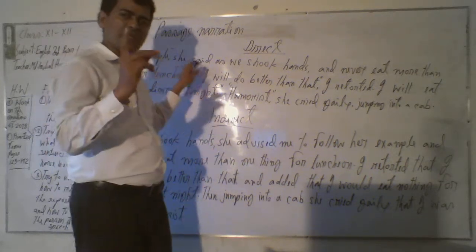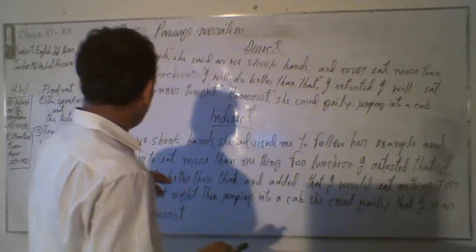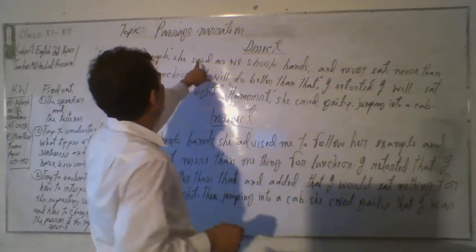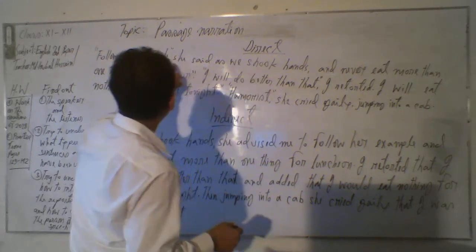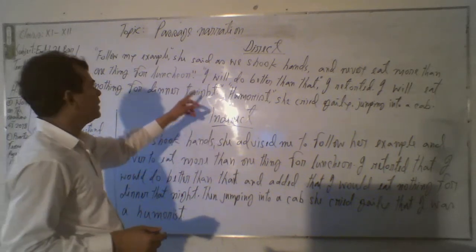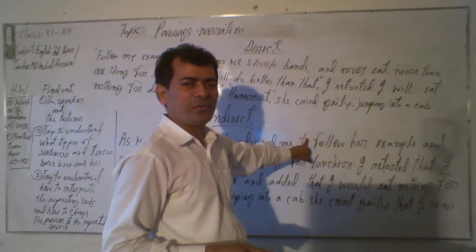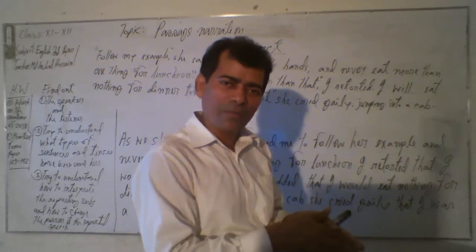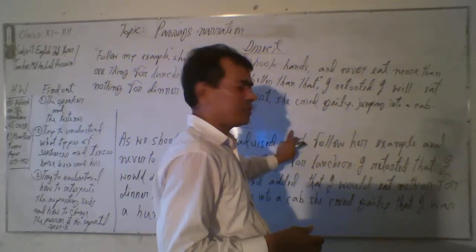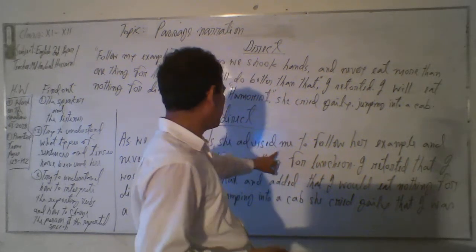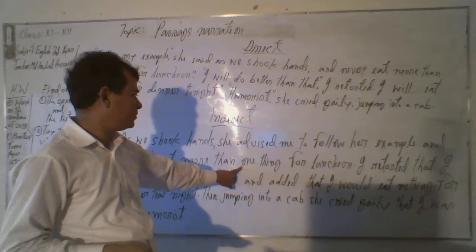The first sentence is an imperative sentence. We know how to change an imperative sentence from direct to indirect. The reporting verb has been brought to the beginning. She said, 'as we shook hands' — she would be advised, because she is advising. As we shook hands, she advised me — since it is an imperative sentence, we use 'to' between the reporting verb and the reported speech, and we omit the inverted commas. So: 'As we shook hands, she advised me to follow her example and never eat more than one thing for lunch.'